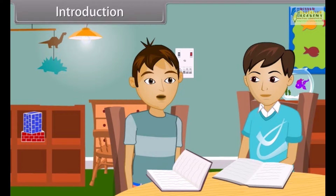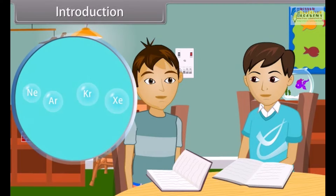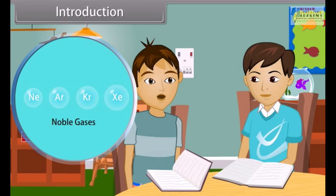These gases are known as noble gases. Noble gases are present approximately 1% in air. And what are the names of these gases? Neon, Argon, Krypton and Xenon — all together known as noble gases.